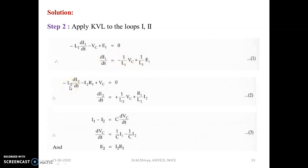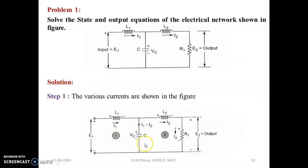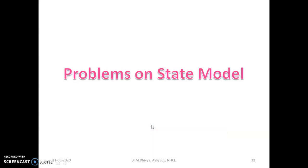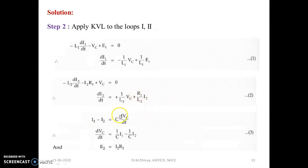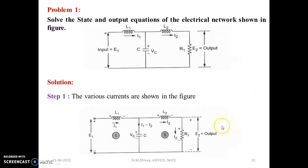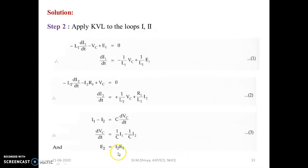Similarly, the current flowing through the capacitor is given by I1 minus I2 equals C times dVc/dt. From this, dVc/dt can be written as 1/C times I1 minus 1/C times I2. The voltage across the resistor R1 is given by E2 equals I2 times R1.